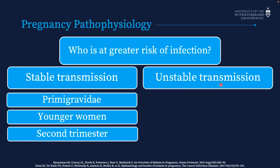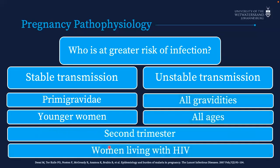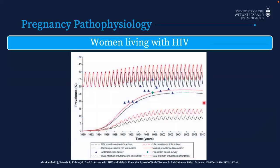Specific groups are at even greater risk. In stable transmission areas, primigravidae and younger women are at highest risk because they haven't previously been infected during pregnancy, so they have no antibodies to var2CSA. In the second trimester there's thought to be altered splenic function increasing infection risk — and this is true in unstable transmission areas too, though all gravidities in our area are at risk.